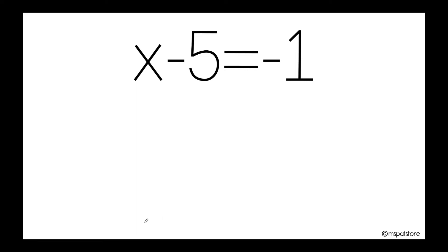So whatever number that is on the side where my variable is, it is automatically an intruder. In order for you to cancel that intruder, you need to do the inverse operation.